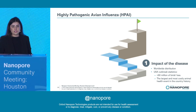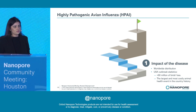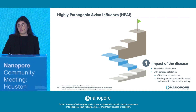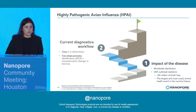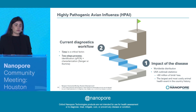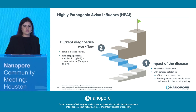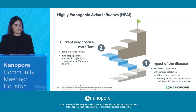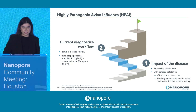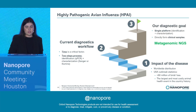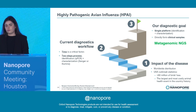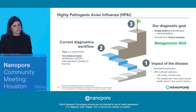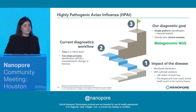The current outbreak in the U.S. is considered the largest animal disease event in the country's history. We also know that time is a critical factor when we're talking about the diagnostic of this virus. Currently, the process is based on first identification and then characterization using sequencing platforms. And our group has the goal to combine identification and characterization in one single platform using nanopore sequencing from clinical samples.